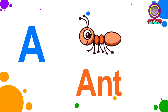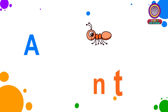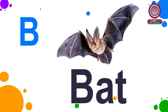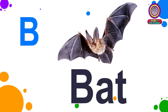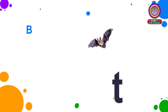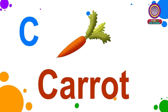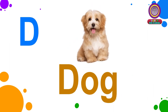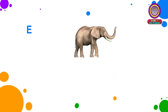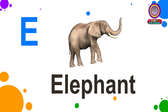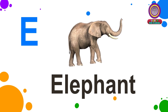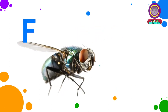A for Ant, B for Bat, C for Carrot, D for Dug, E for Elephant.